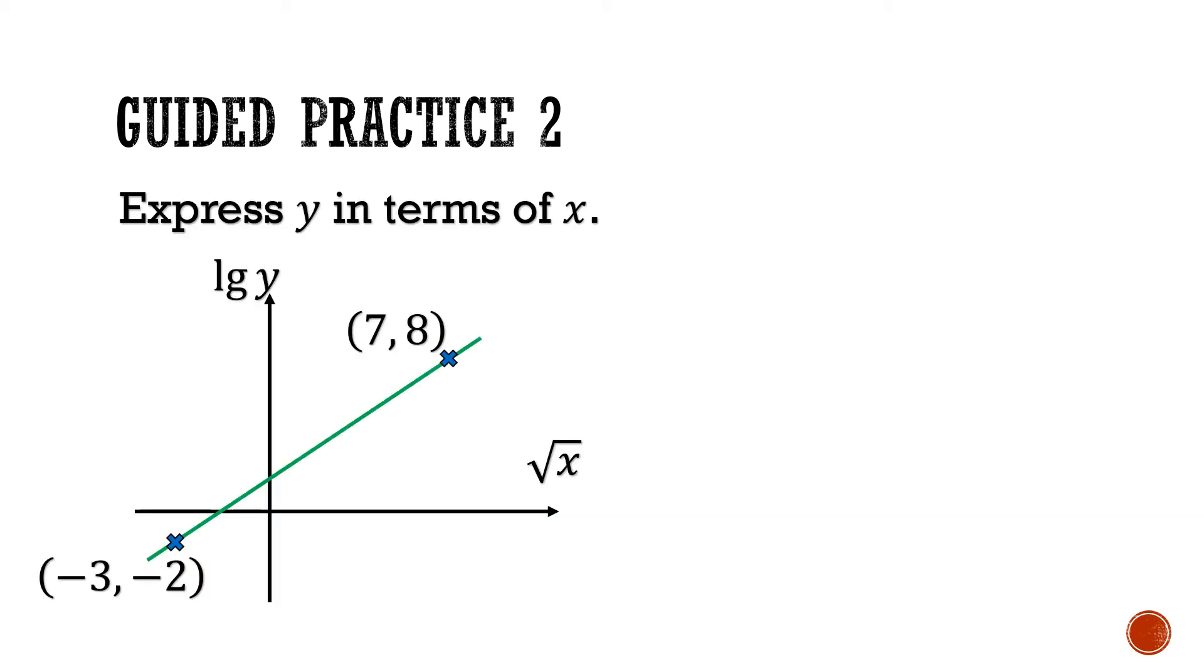In our second practice question, we have another linear law graph. This time, we have log base 10 of y as the vertical axis, and square root of x as our horizontal axis. This graph passes through two points, (7, 8), and (-3, -2).